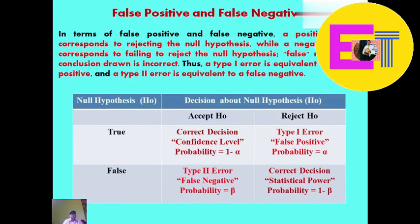Now we should understand the concept of false positive and false negative. In terms of false positive and false negative, a positive result corresponds to rejecting the null hypothesis, while a negative result means failing to reject or accepting the null hypothesis. False means the conclusion drawn is incorrect.